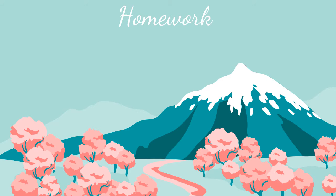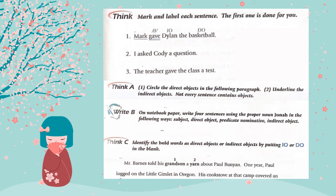That's it for your lesson today. Your homework is to complete Language — see pages 153 and 155. On page 153, mark and label each sentence. The first one is done for you. Number one: Mark gave Dylan the basketball. Underline your verb twice — gave. Who gave? Mark gave, so mark is underlined once as your subject. The verb is an action verb, so you're looking for a direct object, not a predicate nominative. Mark gave what? Mark gave the basketball — not Dylan. Mark gave the basketball to whom? To Dylan. So Dylan is our indirect object.